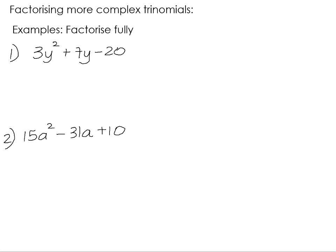Up until now, we've been learning to factorise trinomials where the coefficient of the squared term in the expression is a 1. We're now going to have a look at what happens when the coefficient of the squared term is a number other than 1.